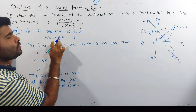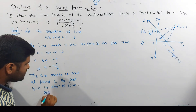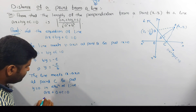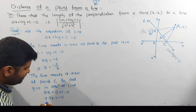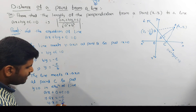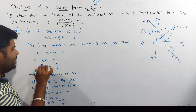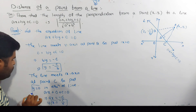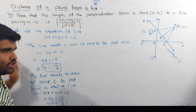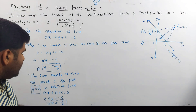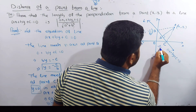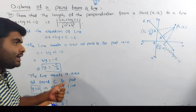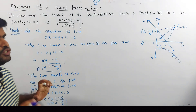Now put y equal to 0 in the equation of line. So ax plus 0 plus c equal to 0, which gives ax equal to minus c, so x equal to minus c by a. When y equals 0, x equals minus c by a — this point is C. So the value is minus c by a, 0.